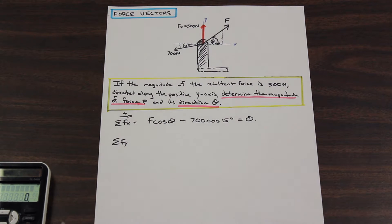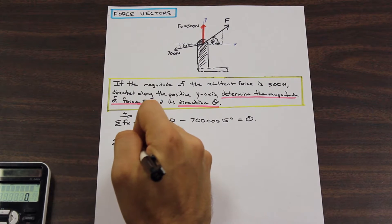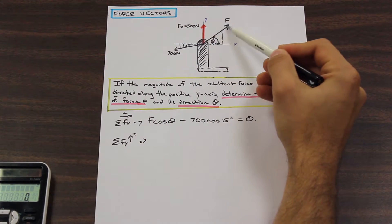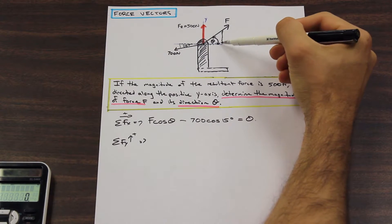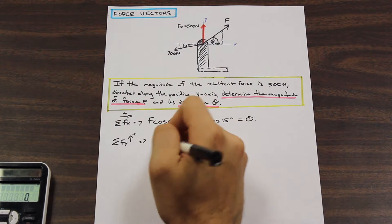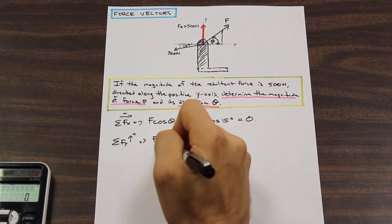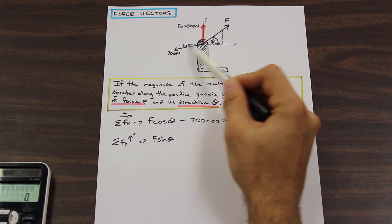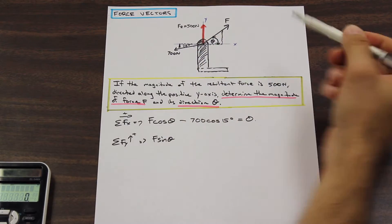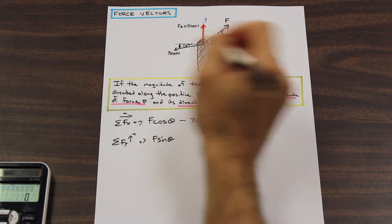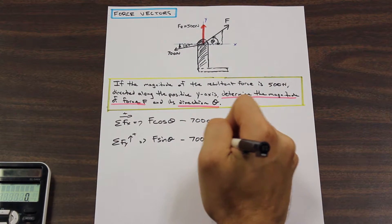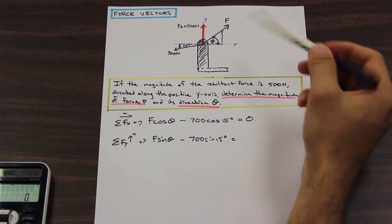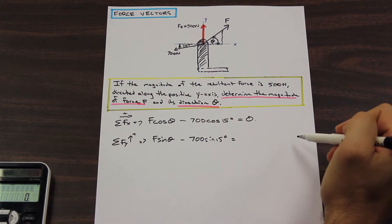Now let's do the same thing in the y direction, with up as our positive direction. Starting with F: this time we're looking for the y component — the opposite side of the triangle — so that's F sine theta, in the positive upward direction. For the 700 newton force, that component is downward, so it's negative 700 sine 15 degrees. Now, be careful here: you might be tempted to just add 500 to this side and equate to zero, but that would be wrong.